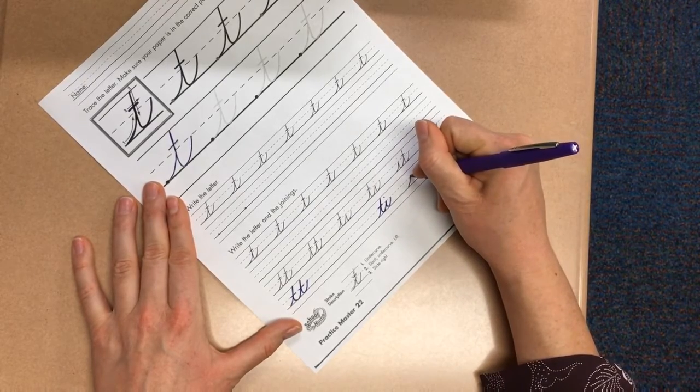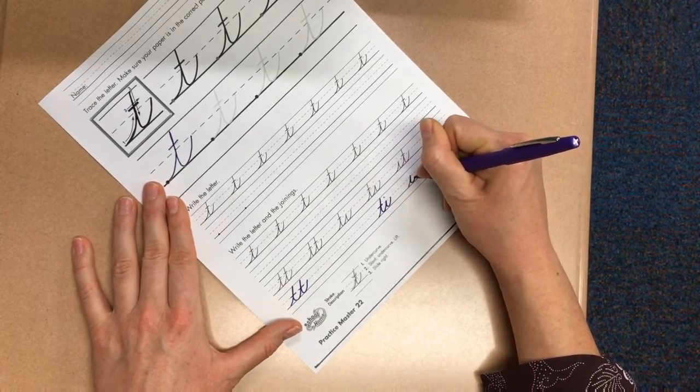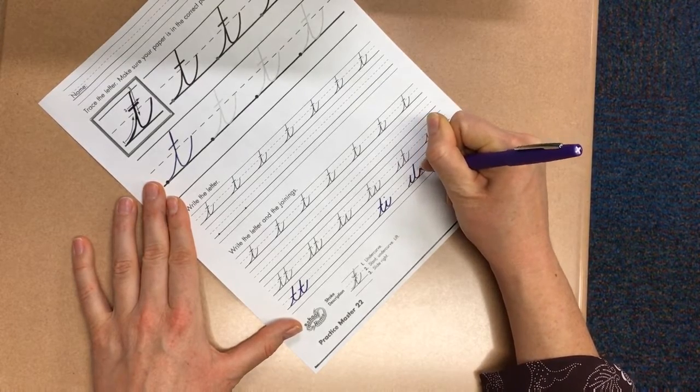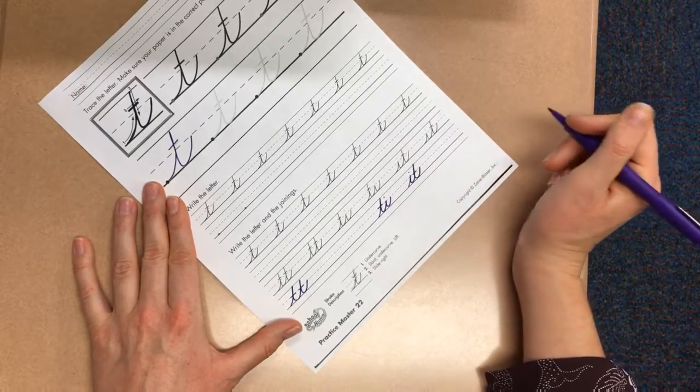Same with the it. Undercurve, slant, undercurve, slant. Then I'm going to cross my T, and dot my I.